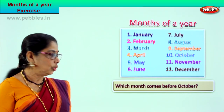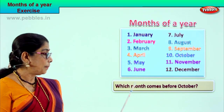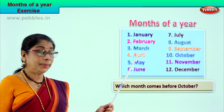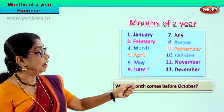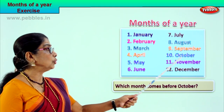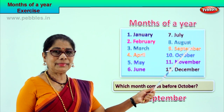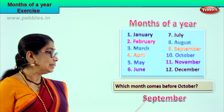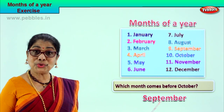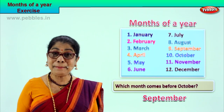Look at the question, read along with me: which month comes before October? Let's look — January, February, March, April, May, June, July, August, September, October. Which month comes before October? September. The month that comes before October is September. Spell September: S-E-P-T-E-M-B-E-R. Good.